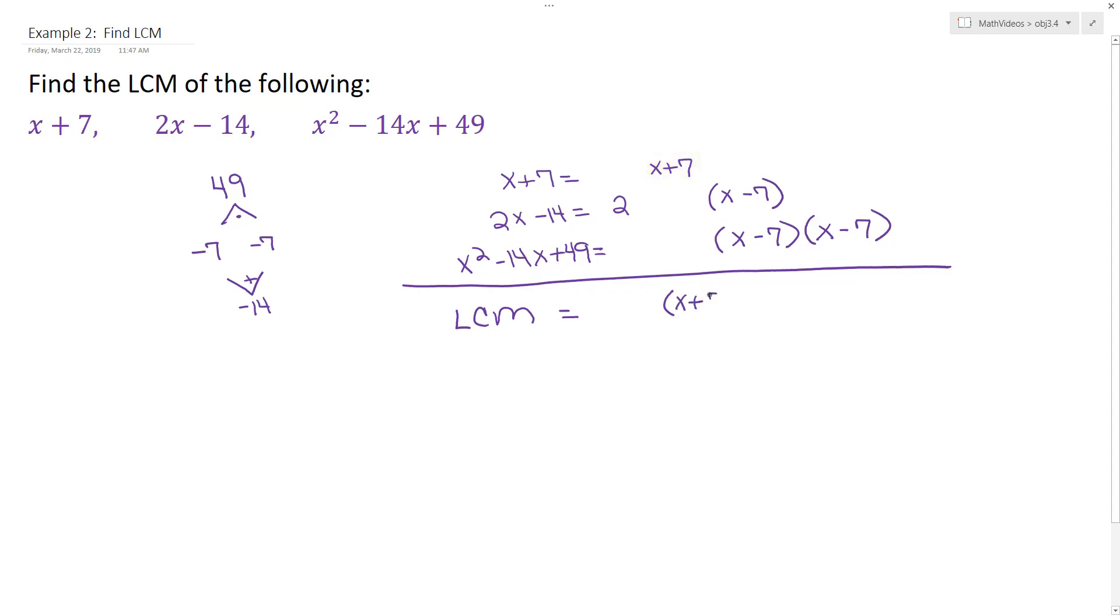Because for our least common multiple, it has to be big enough that each of the factors of each of the expressions divides into our least common multiple.